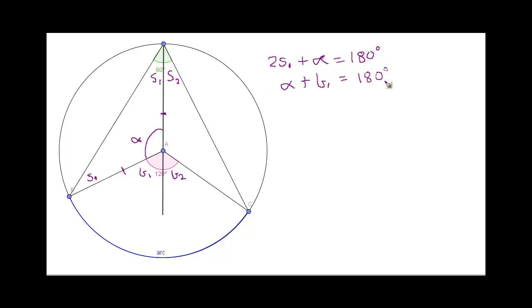Now, if you look here, you'll see that we have two simultaneous equations. And we can solve these equations through substitution. Because both of these equations equal 180 degrees.